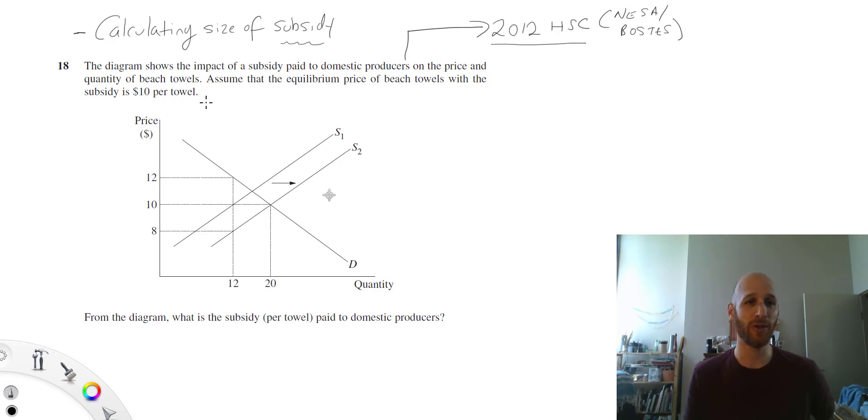If we look at the question, it's all about subsidies, beach towels, and similar topics. The question asks: what is the subsidy per towel paid to domestic producers?